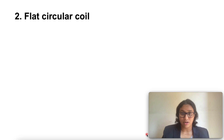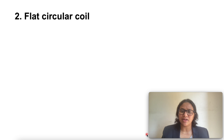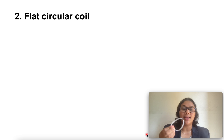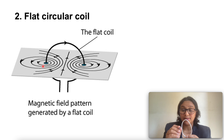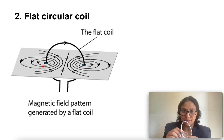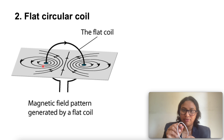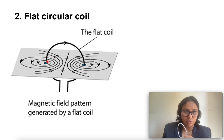Next is the flat circular coil. We have observed the pattern of magnetic field lines produced around a current carrying straight wire. Suppose this straight wire is bent in the form of a circular loop and a current is passed through it. At every point of the current carrying circular loop, the concentric circles representing the magnetic field around it become larger and larger as we move away from the wire.